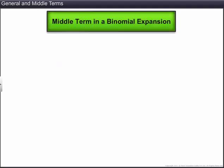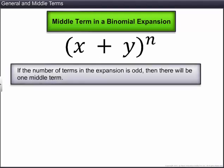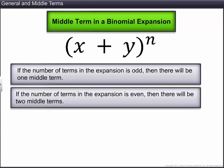Let us now find the middle term in the expansion of a binomial. Let us first get the concept of middle term clear. If the number of terms in the expansion is odd, then there will be one middle term. If the number of terms in the expansion is even, then there will be two middle terms.